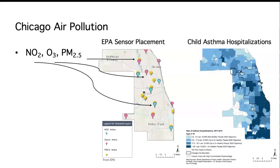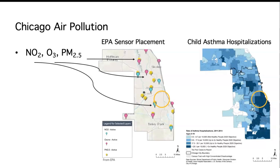We can also look at related health outcomes. On the right-hand panel, I have a map of child asthma hospitalizations over the city of Chicago. These sensors are great for monitoring ambient air pollution levels — kind of what's in the background, what the general Chicago population is being exposed to. But we've also seen that what does it mean on a finer scale? These are our average exposures from these EPA sensor placements, and we see related negative health outcomes that aren't really being captured by just these EPA sensors.